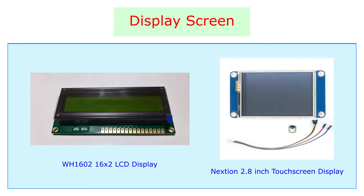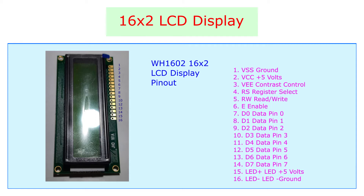4. Display screen. Screens such as the 16x2 LCD display or Nextion screen are used for display. The 16x2 LCD display has a total of 16 pins. The first pin is connected to ground. The second pin is given plus 5 volts and the third pin is contrast control through which positive voltage is fed through a 10k preset. Pins 4, 6, 11, 12, 13 and 14 are connected to the Arduino. The 15th pin is given plus 5 volts and the 16th pin is connected to ground. These pins are used for LCD backlight.